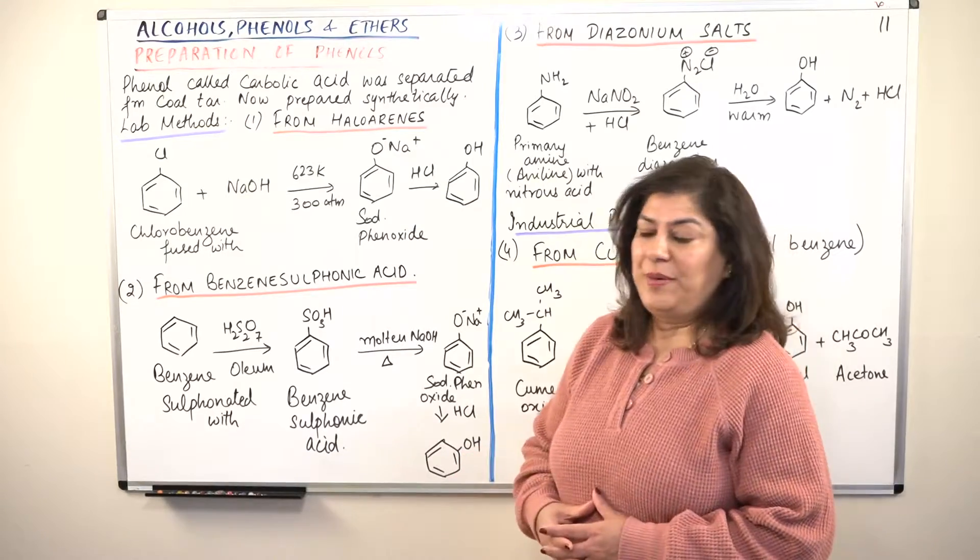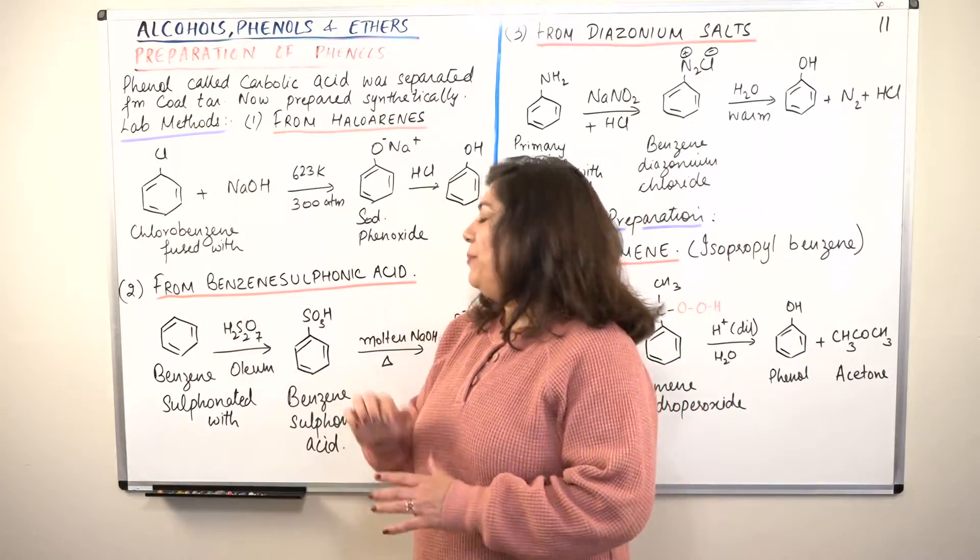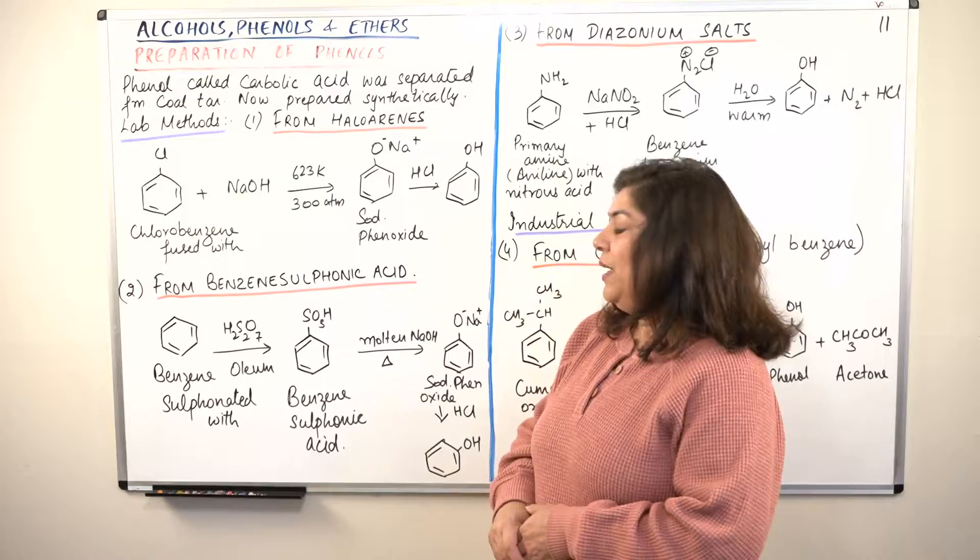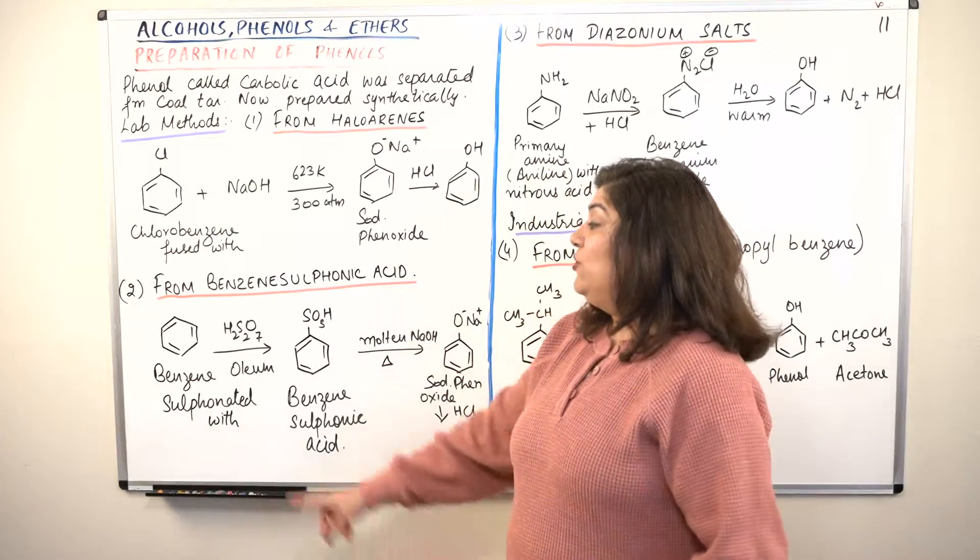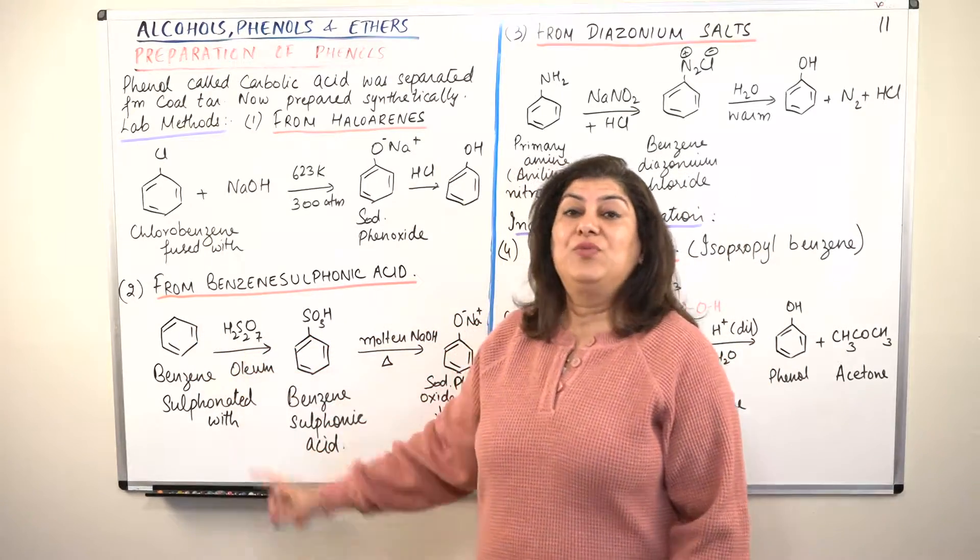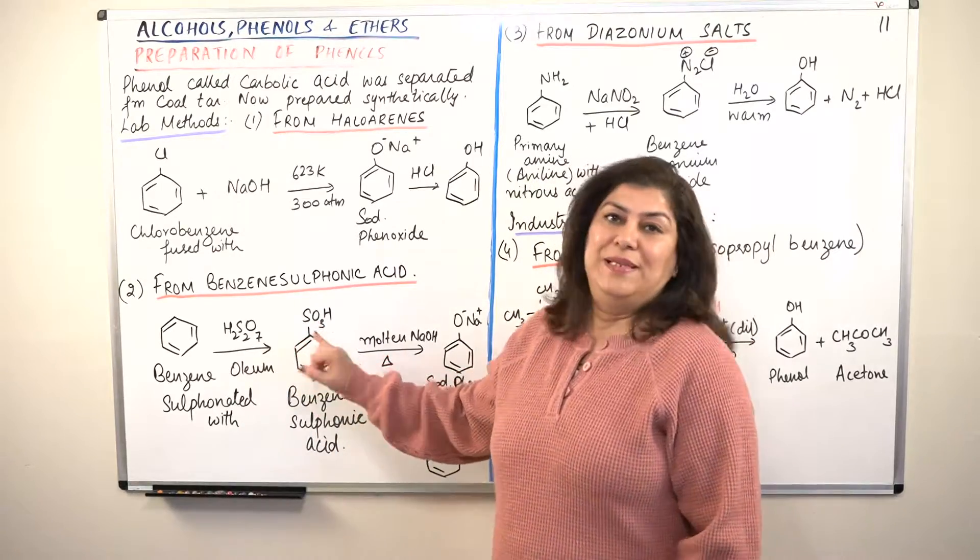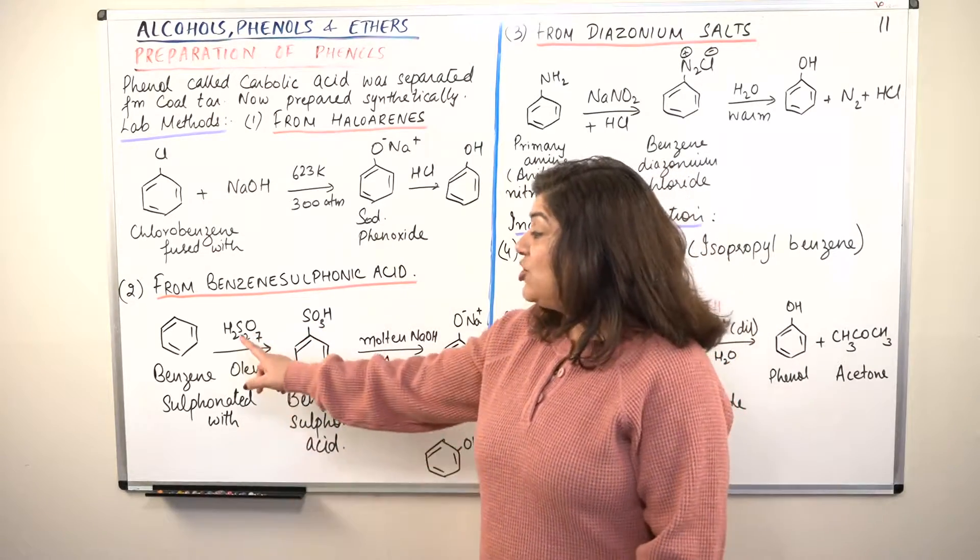The second method of preparation is that you can get it from benzene sulfonic acid. How is benzene sulfonic acid prepared? If you take benzene and make it react with oleum, you get benzene sulfonic acid. Now what is oleum?